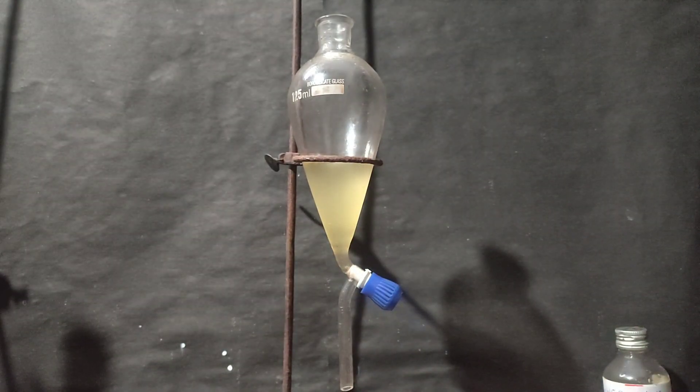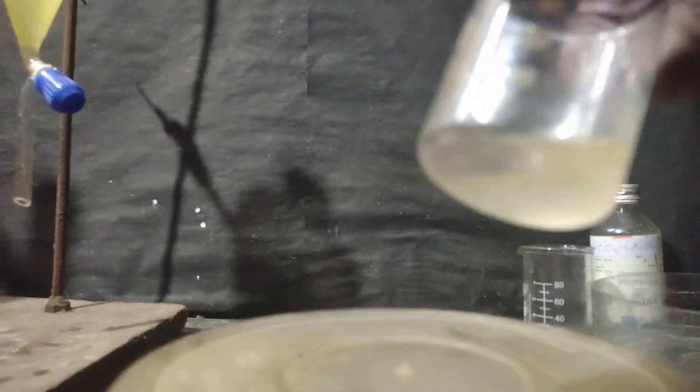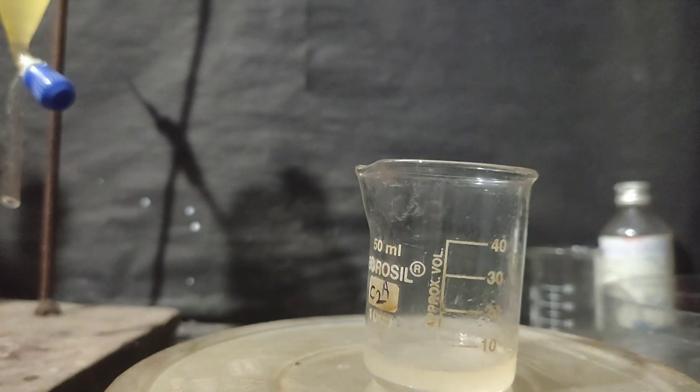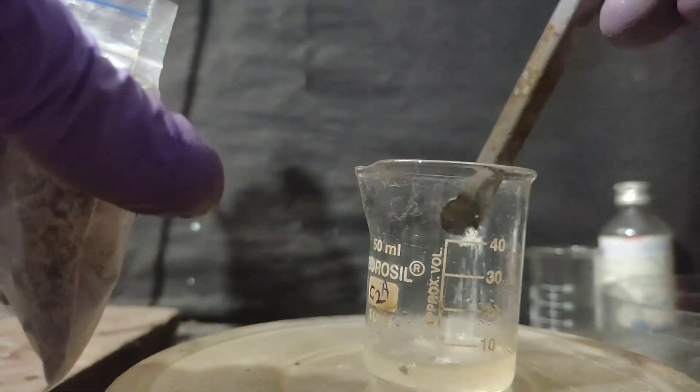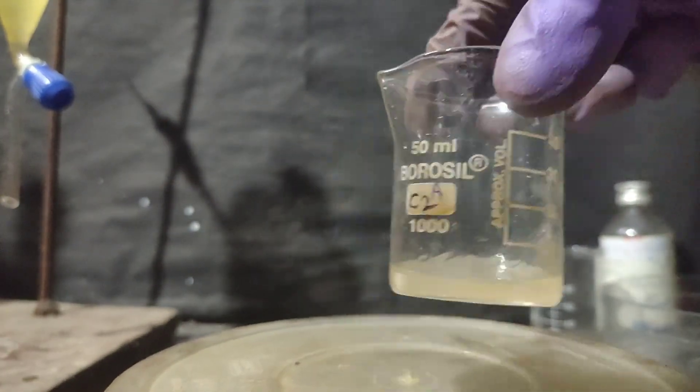The organic layer is cloudy due to presence of water. So to dry it, I added some anhydrous calcium chloride and swirled the mixture for some time and kept it at rest for few minutes.